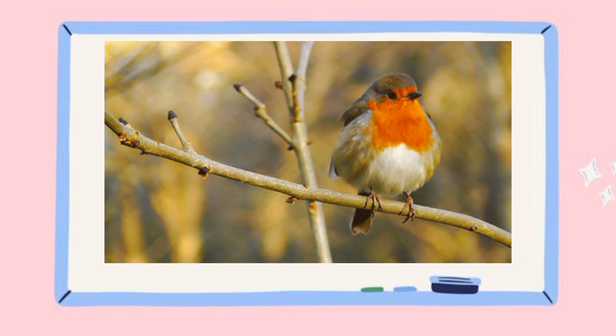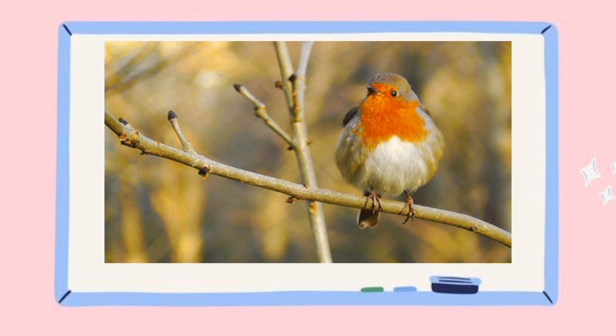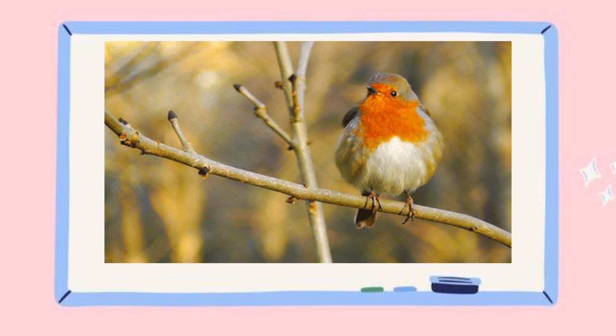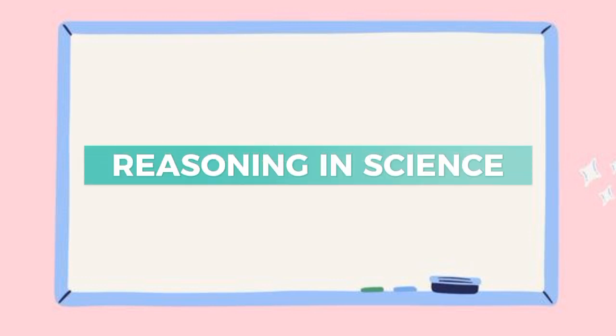Deductive reasoning is when we start with a general idea and use it to make specific predictions. For example, if we know that all birds have feathers, we might use deductive reasoning to predict that a robin, which is a type of bird, also has feathers. Both types of reasoning are important in science. Scientists use inductive reasoning to come up with new ideas and theories, and they use deductive reasoning to test those ideas and see if they are true.